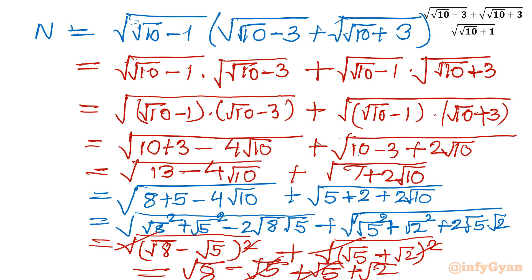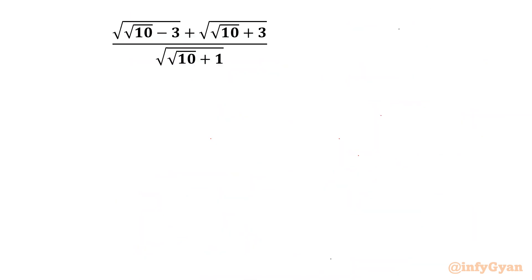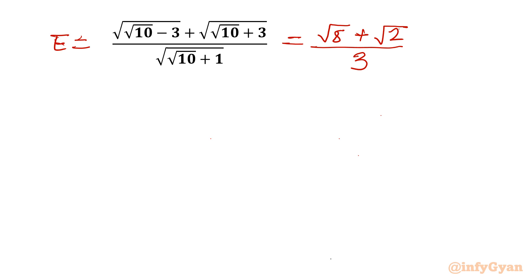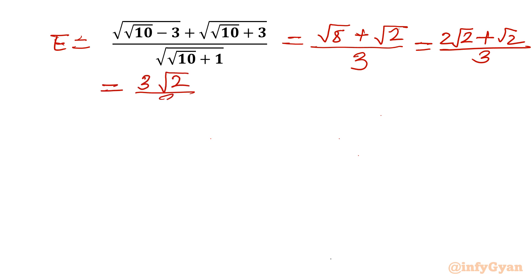So the numerator is √8 plus √2, and the denominator is 3. Writing √8 as √(4 times 2) gives 2√2, so we have 2√2 plus √2 over 3, which equals 3√2 divided by 3. The answer is √2. Root 2 is our final answer for Method 1.